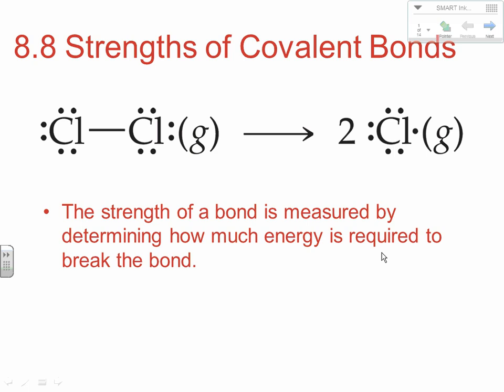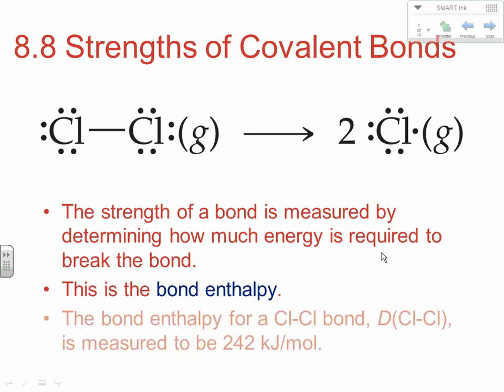The strength of a bond is measured by determining how much energy is required to break the bond. We call it the bond enthalpy. The bond enthalpy for the Cl-Cl bond, written as D(Cl-Cl), is measured to be 242 kilojoules per mole. So if we break a mole of Cl2, it would take 242 kilojoules of energy. Bond enthalpies are listed as per-mole amounts and represent how much energy it takes to break.